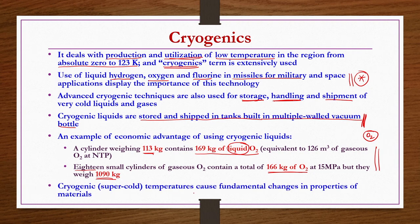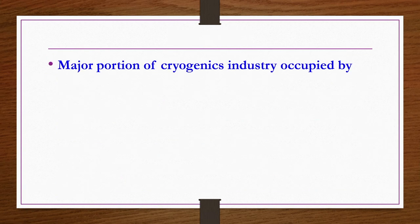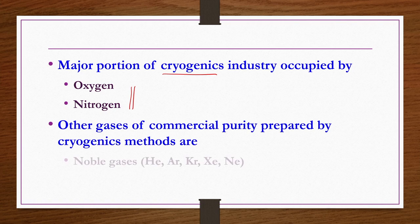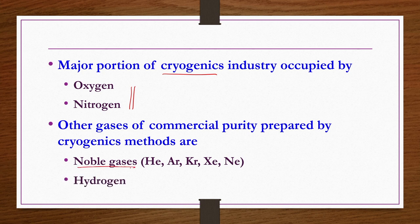Cryogenic or super cold temperatures cause fundamental changes in the properties of materials, which provides certain advantages. The major portion of cryogenic industries is occupied by oxygen and nitrogen, though hydrogen, carbon dioxide, and some noble gases are also produced commercially using cryogenic methods.